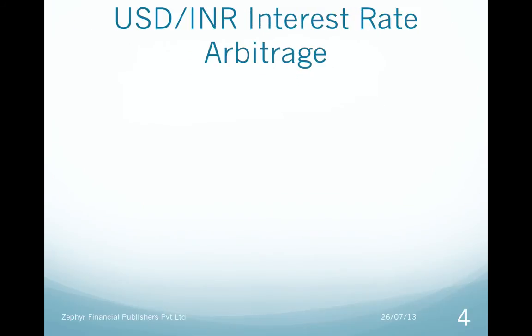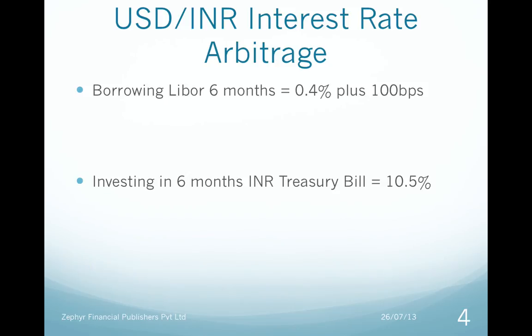Let's take an example of the USD/INR interest rate arbitrage. The borrowing cost for an FII is 6-month LIBOR of 0.4% plus 100 basis points. The yield on the 6-month INR treasury bill is 10.5%, so the spread for an unhedged position is 9.1%.